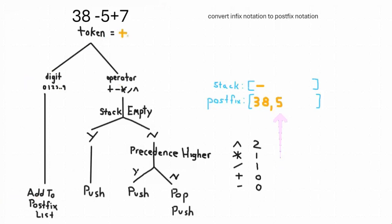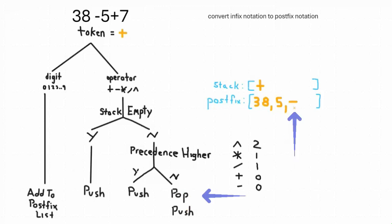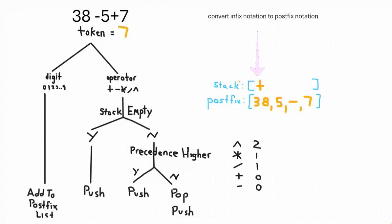We get the next token: five. Is it a digit or an operator? It is a digit — add it to the list. The next token is plus. Is it a digit or an operator? It's an operator. Is the stack empty? No. Is the precedence of plus greater than subtraction? No, they are the same. When they're the same, you pop and then push. I popped off the minus sign and pushed the plus sign. We process seven — it is a digit, so add it to the postfix list.